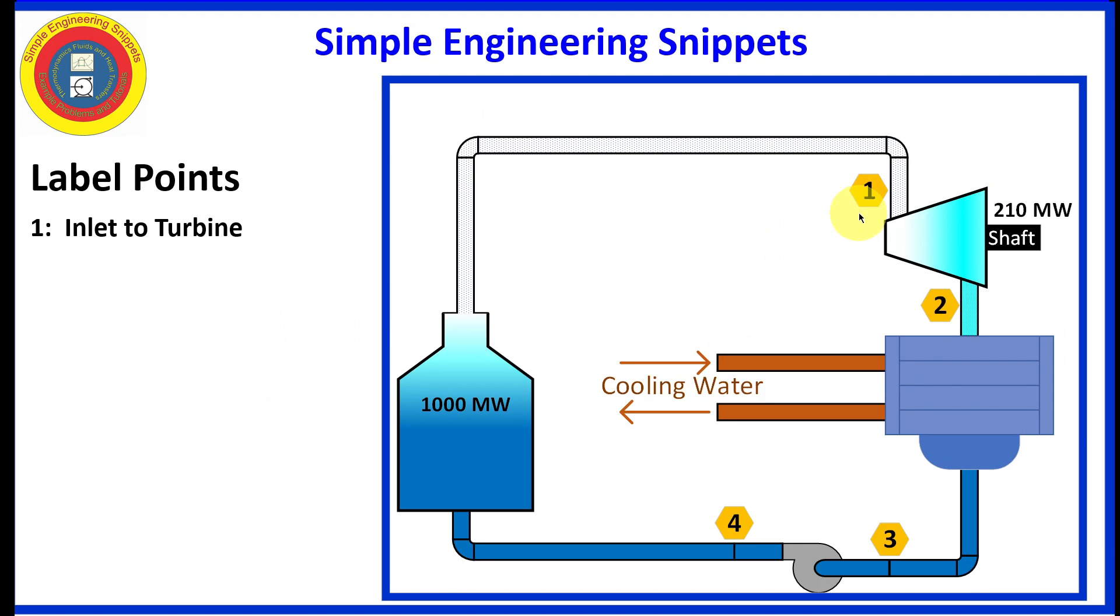Let's label some points. Point one will be the inlet to the turbine. Point two is the outlet from the turbine and inlet to the condenser. Point three is the outlet from the condenser hot well and inlet to the pump. And point four is the outlet from the pump, the inlet to the boiler.